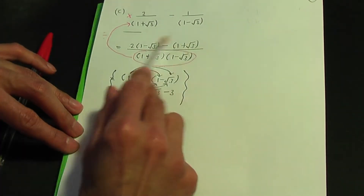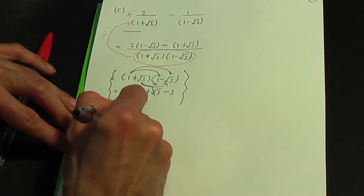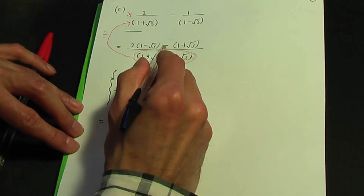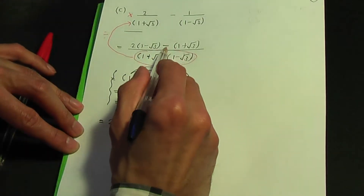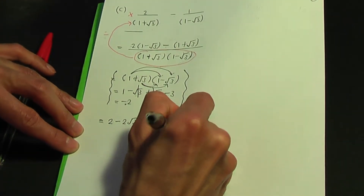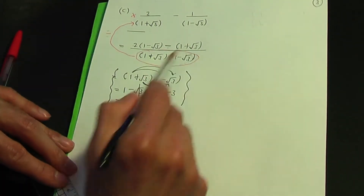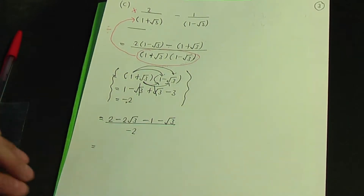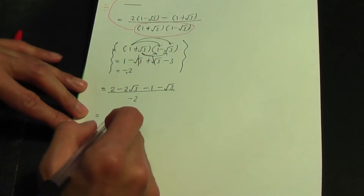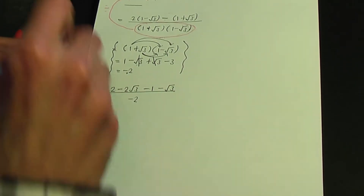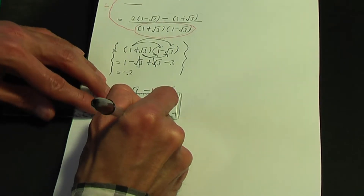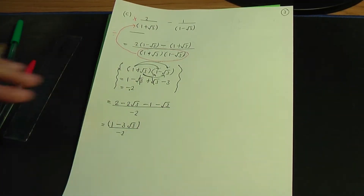Now expanding the top: two times one is two, two times minus root three is minus two root three, minus times one is minus one, and minus times plus root three is minus root three. Divided by minus two. Simplifying the numerator: two minus one is one, and minus two root three minus root three is minus three root three, divided by minus two. That's the solution to part C.